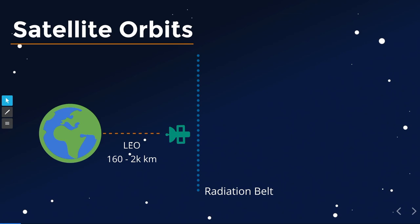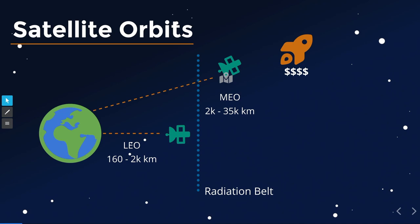If you try to go past LEO, you suddenly need much bigger satellites that must withstand a lot more radiation. It becomes a lot more expensive — you need more rocket fuel and more satellite parts. GPS satellites, for example, are in medium Earth orbit at around 2,000 to 35,000 kilometers. You could go up to geostationary orbit at precisely 35,786 kilometers, but then you face issues like signal round trip times approaching one second of delay, which is suboptimal for many modern services.